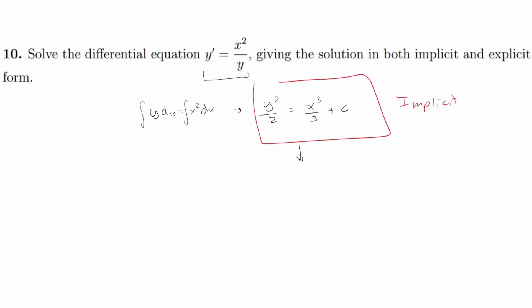For explicit we're going to continue on simplifying. We'll multiply both sides by 2, so y is going to equal 2 over 3 x cubed plus c. When you multiply a constant by a constant it's just going to be a constant. You have to square root both sides to get rid of the square on top of our y. That's going to leave us with plus or minus square root of everything I just said.